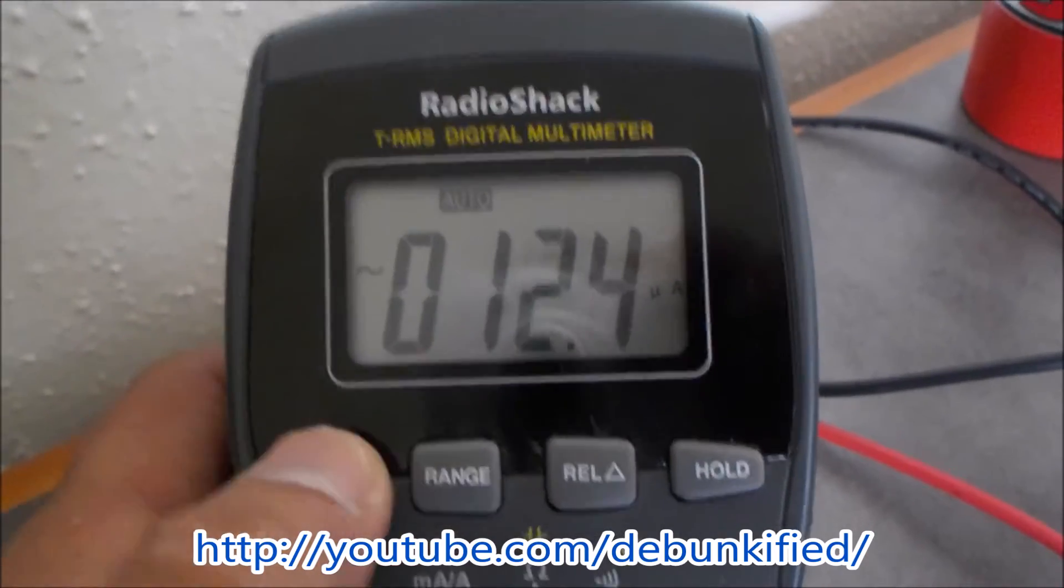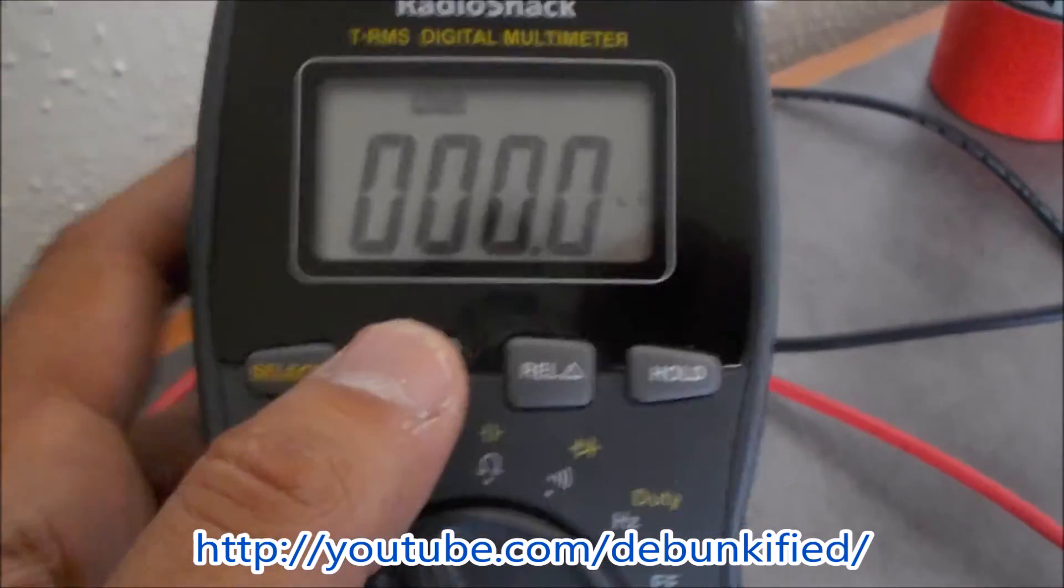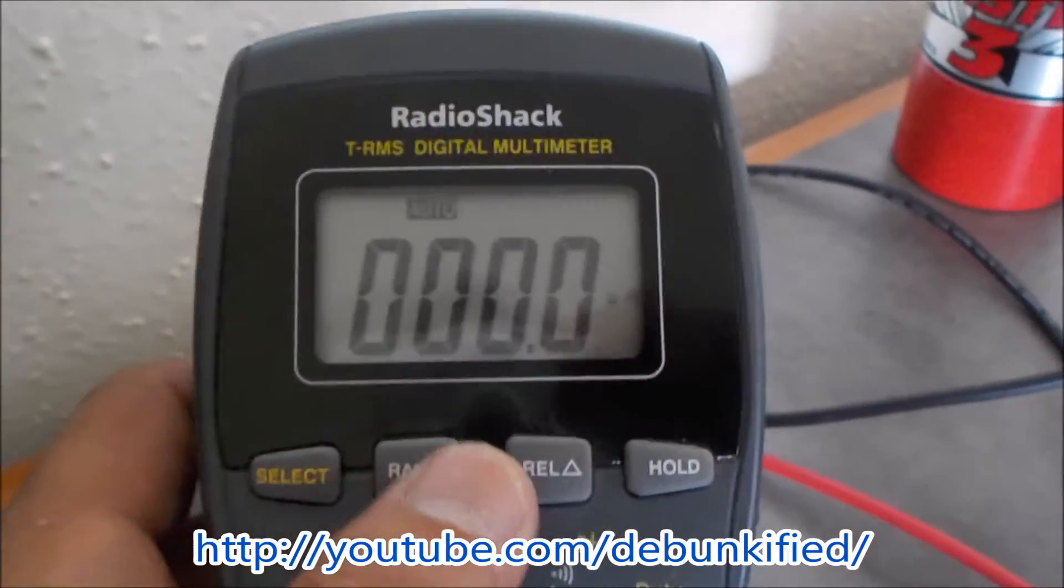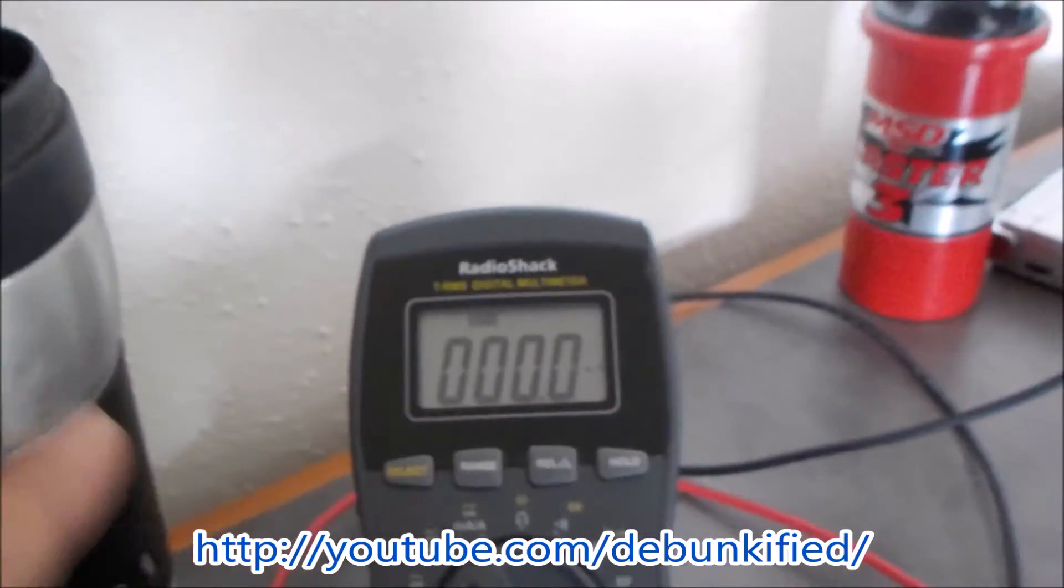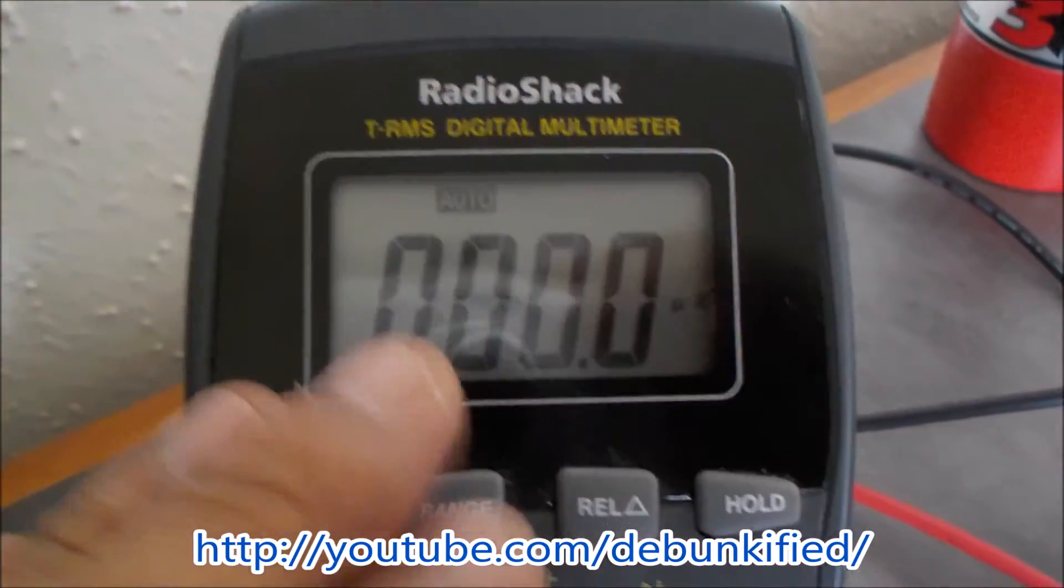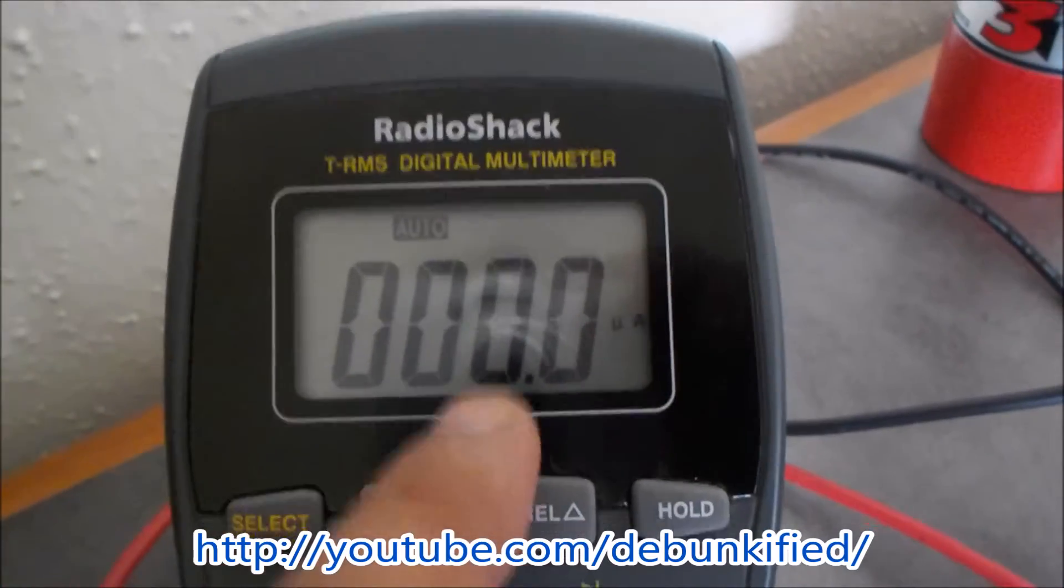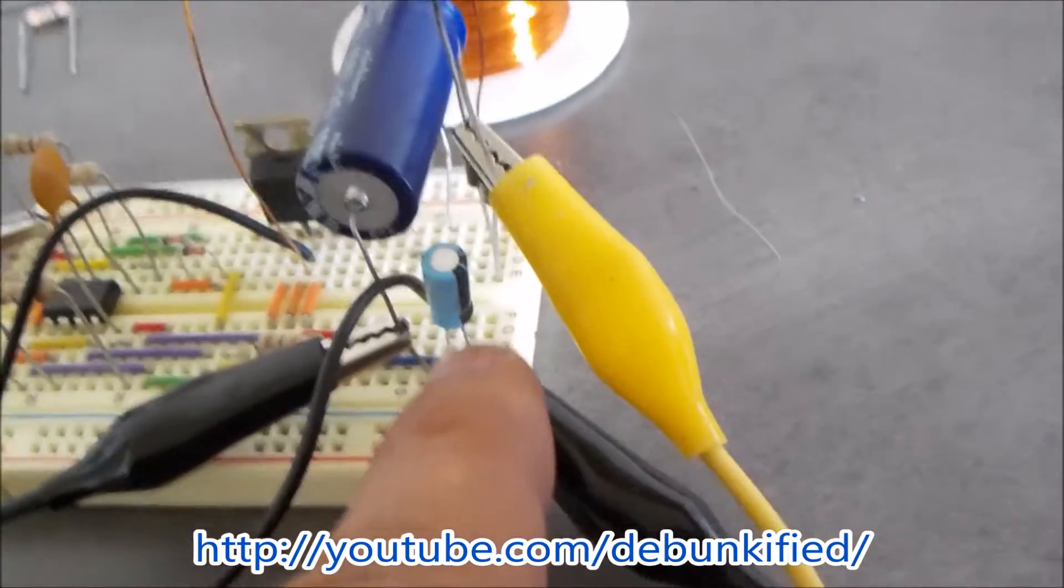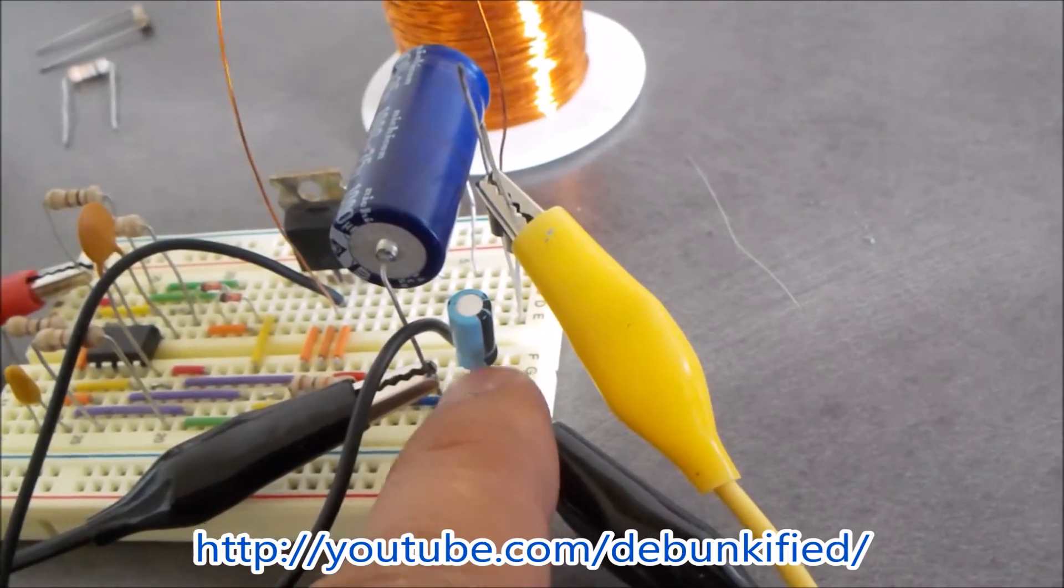I think this is the highest I can push that, and it does show this AC which is not accurate I don't think, because this meter is meant to measure AC coming out of the wall at 60 hertz with a perfect sine wave, and this is not a perfect sine wave I'm pretty sure.